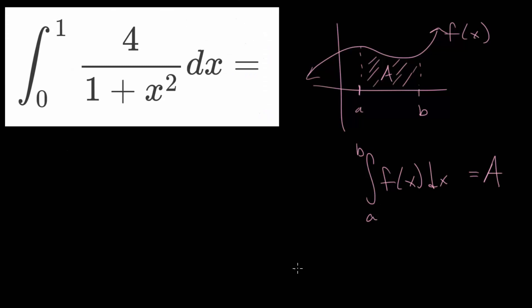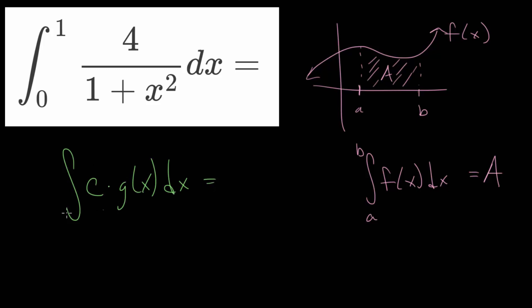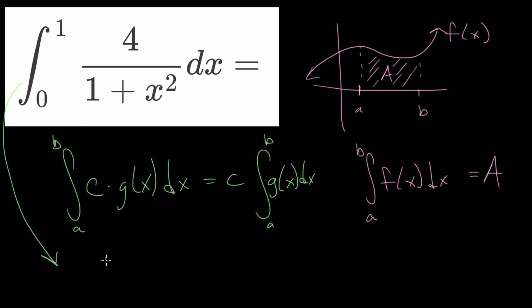One of the first things we can do with our integral is recognize that if we have the integral of some constant multiplied by a function, we can factor out that constant. So we have c multiplied by the integral of g of x dx from a to b. Notice that we have this 4 multiplied by our function, so we can factor that out. We rewrite this as 4 multiplied by the integral from 0 to 1 of 1 over 1 plus x squared, with dx.